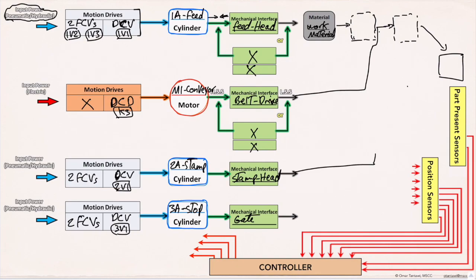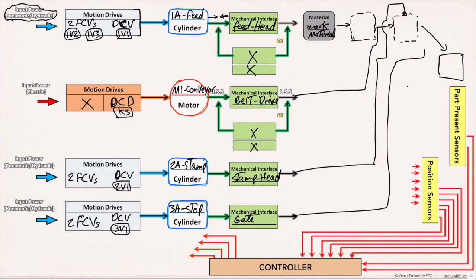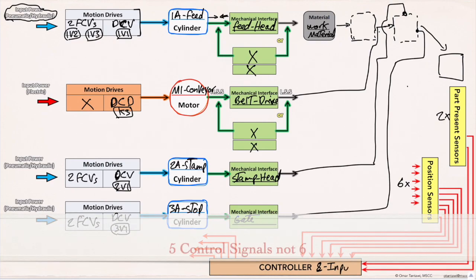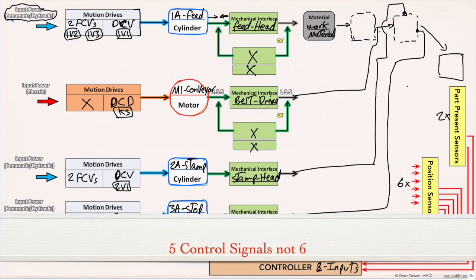Fourth step: specifying and drawing the feedback blocks. There are a total of six position sensors located on the three cylinders, and two part presence sensors located in the field. The fifth step is the controller I/O terminal block. A total of eight feedback signals are connected to the controller as inputs, and six control signals as outputs from the controller to the motion drives — a control signal for each solenoid or coil.